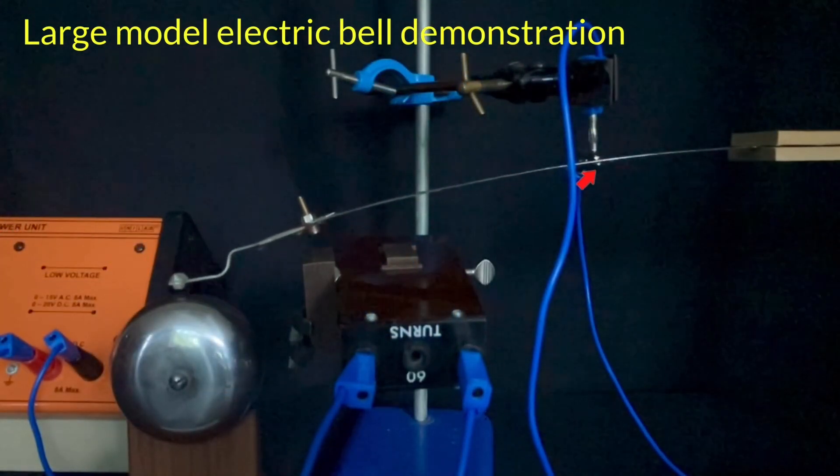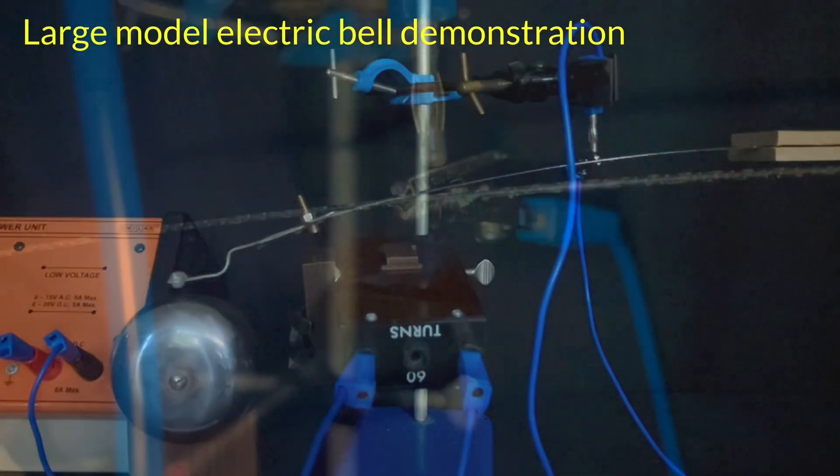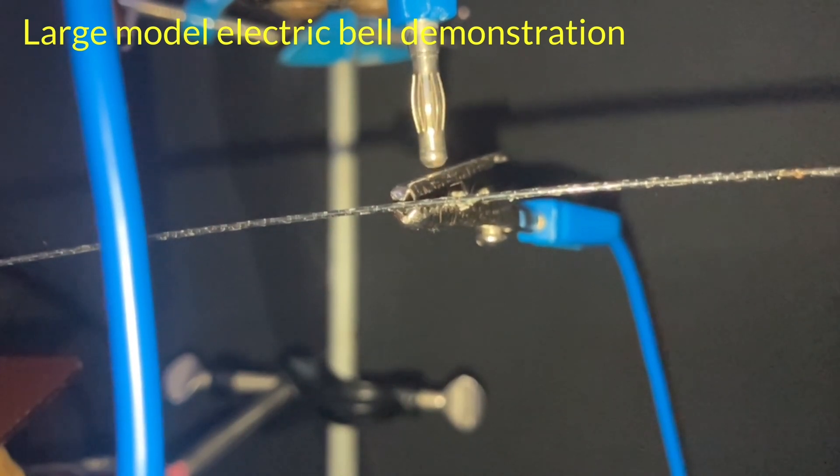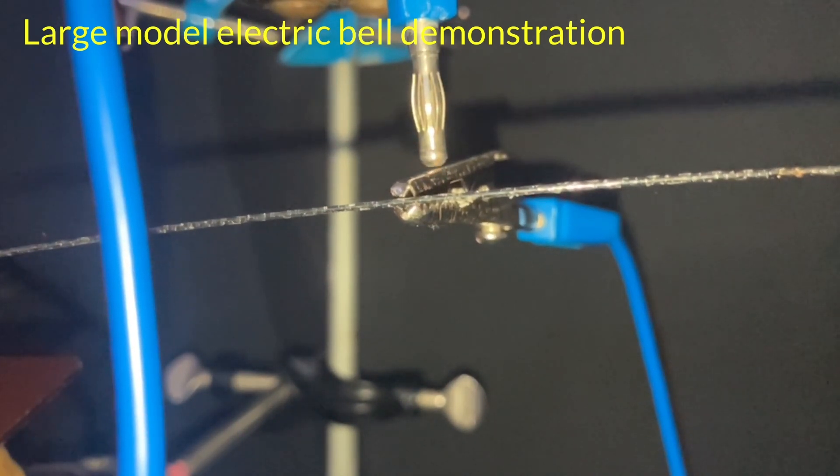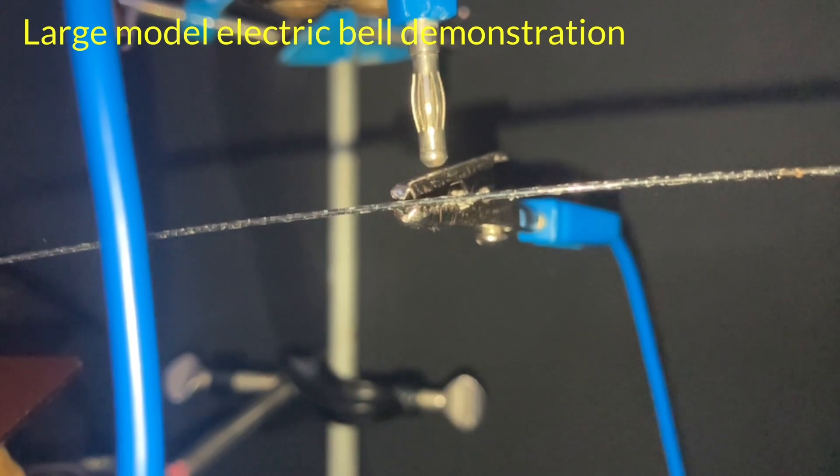It's even clearer on this zoomed-in version. And you can see that the contact is simply a crocodile clip against a connecting lead.